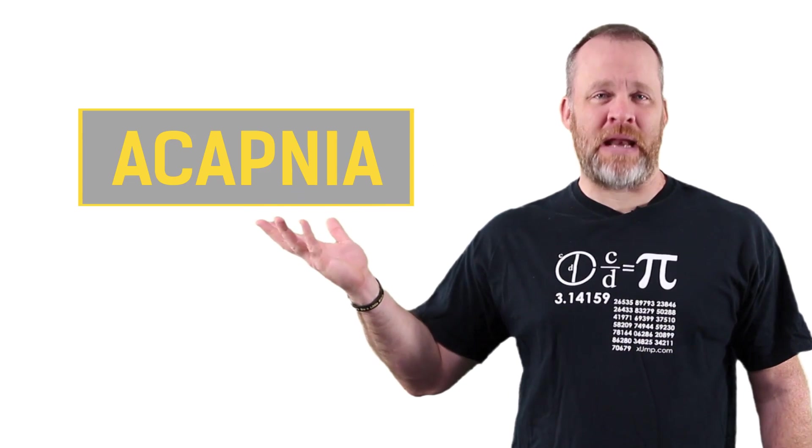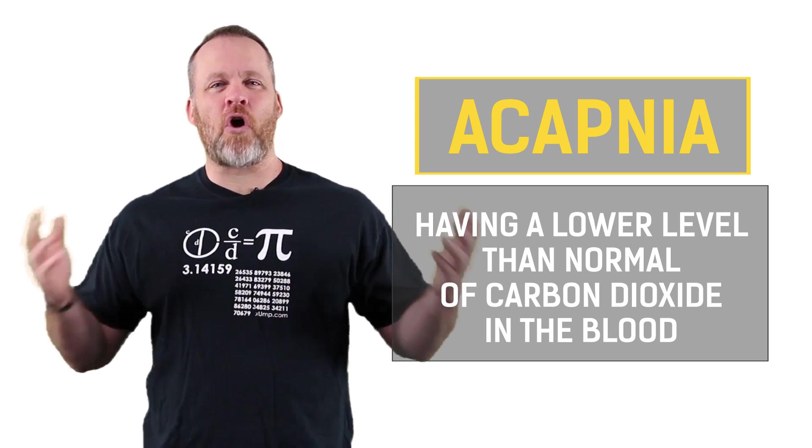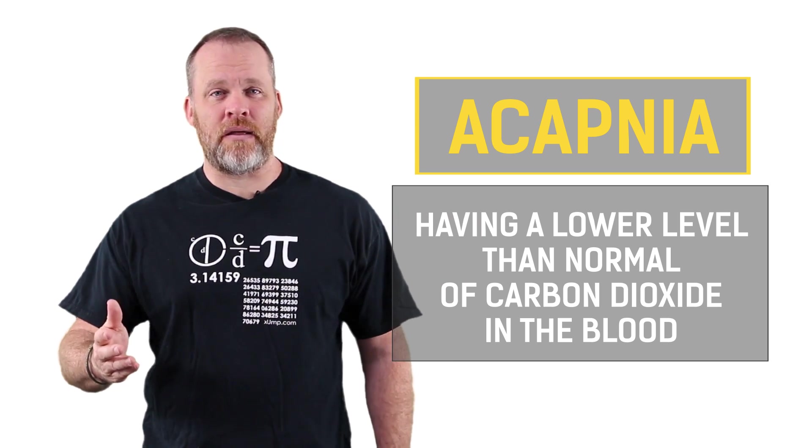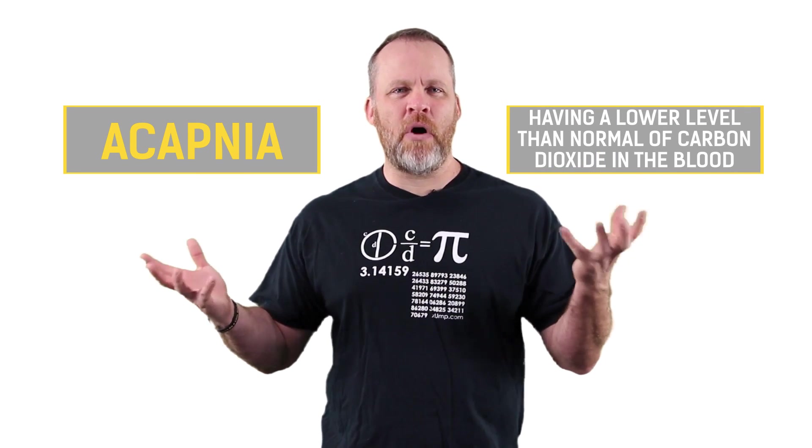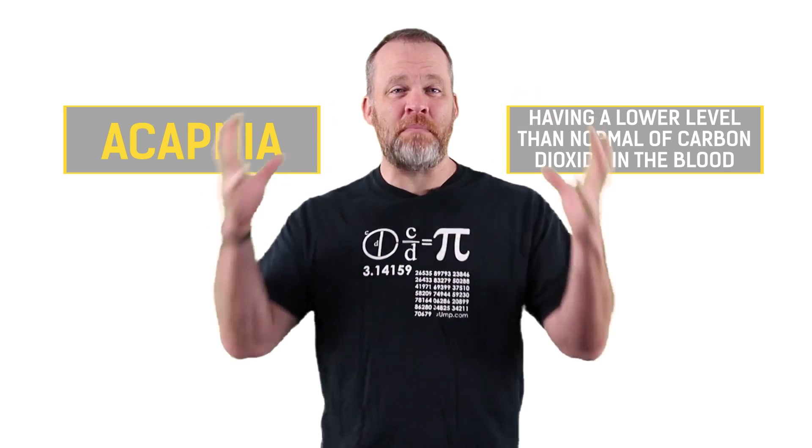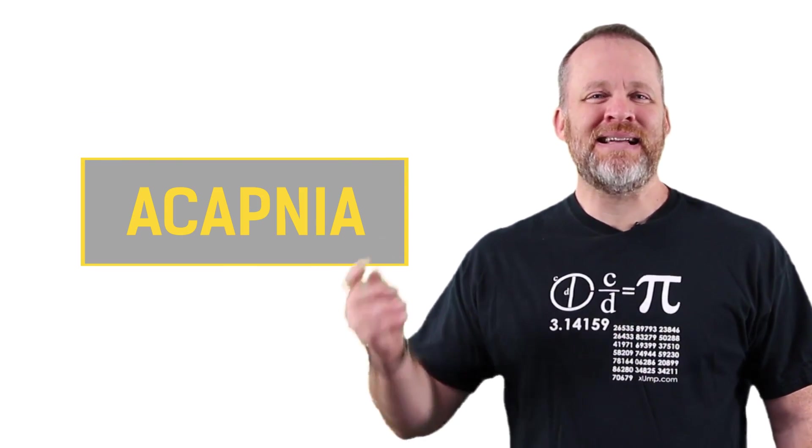Let's take the word acapnea. It means having a lower level than normal of carbon dioxide in the blood. So we need to take the word acapnea and a lower level of carbon dioxide in the blood, turn them both into a picture and see it in one big picture. Acapnea - we'll turn that into a picture by seeing a baseball cap on your knee, acapnea.